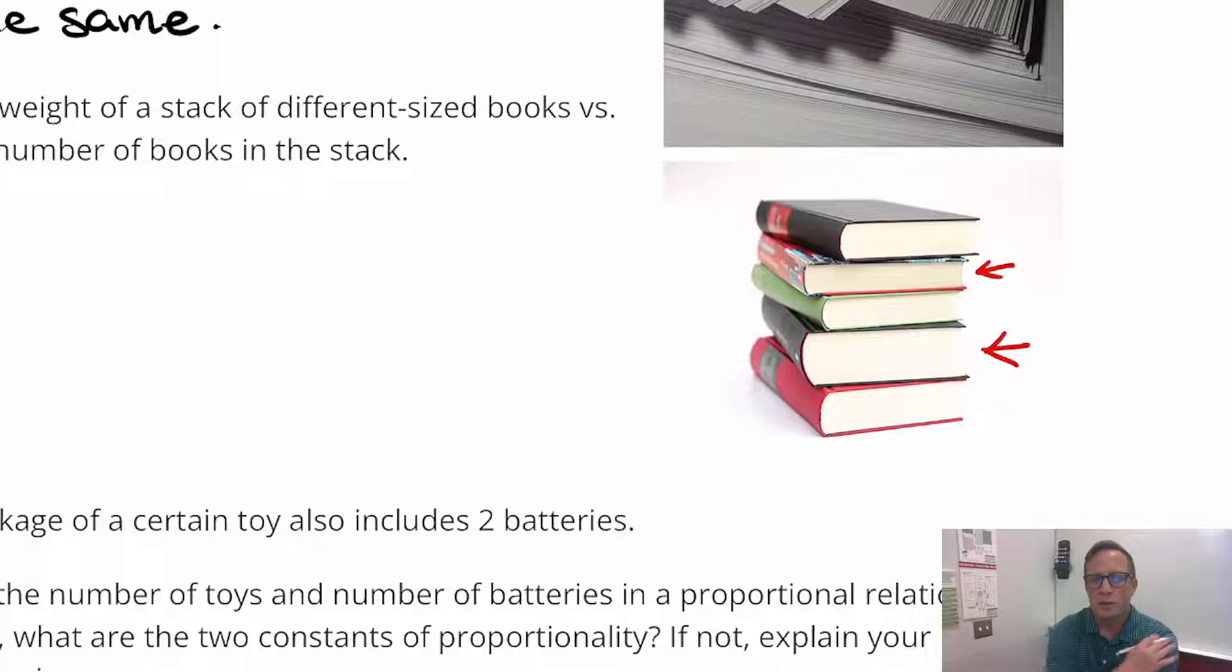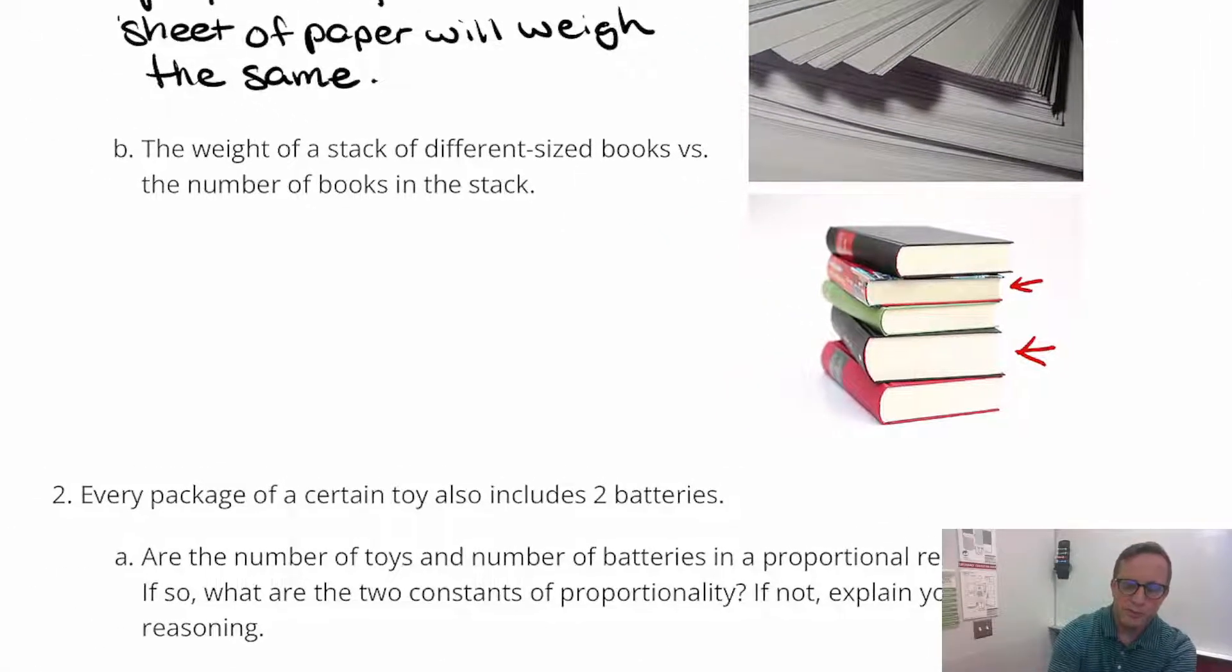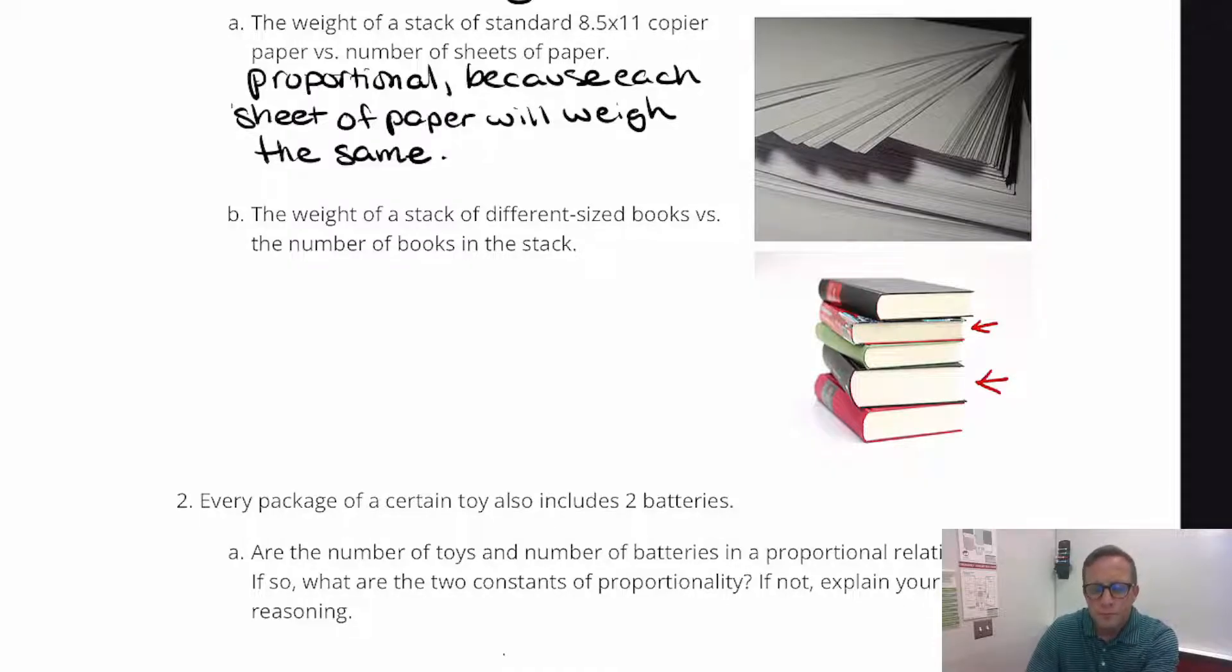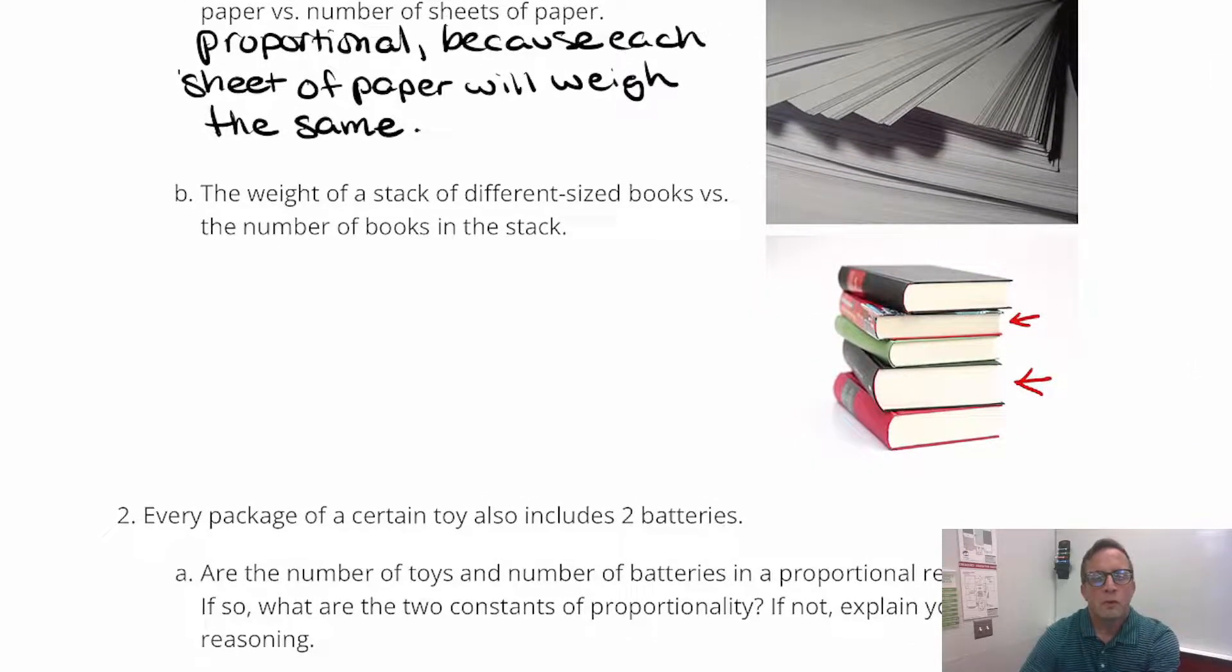So those books, I would assume those books do not have the same weight, right? The thicker books are going to be heavier. Thinner books are going to be lighter. And it even says in the problem that they're different sized books. They're different size. So if they're different size, that's got to tell you that they are not constant size.